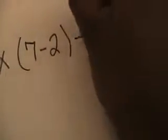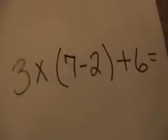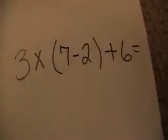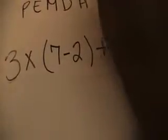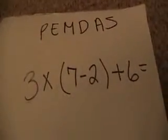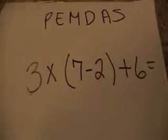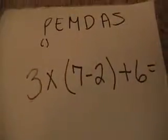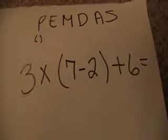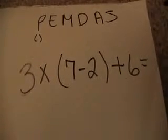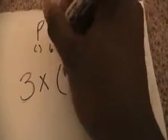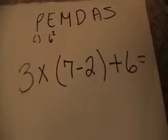Write with me: three times parenthesis seven minus two plus six equals. When we use the order of operations we recall an acronym called PEMDAS, P-E-M-D-A-S. Within PEMDAS we know exactly what part of the problem we need to solve first. The P stands for parentheses, so any part of the problem that has a parenthesis we solve first. E stands for exponent — for example, six squared, which stands for six times six.